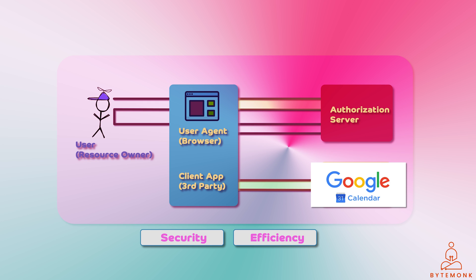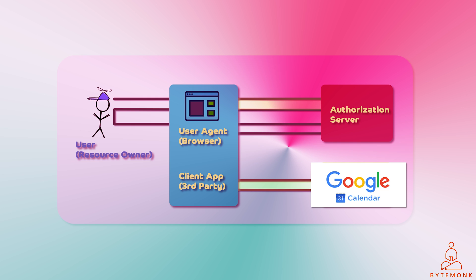Finally, JWTs can be used to represent a variety of claims such as identity, authorization, or other data, making them versatile and adaptable to different use cases. Overall, JWTs are a lightweight token format that can transmit authorization information, but they do not provide authentication or authorization services themselves. OAuth 2.0, on the other hand, is an authorization framework that can authenticate users and grant them access to protected resources — together they enable SSO, or single sign-on.